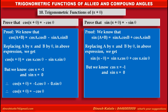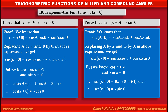But we know that sin π is equal to 0 and cos π is equal to minus 1. Therefore, substituting these values, we get sin(π + θ) is equal to 0 into cos θ plus minus 1 into sin θ. Therefore, solving the above expression, we get sin(π + θ) is equal to minus sin θ.